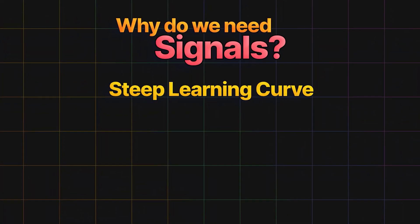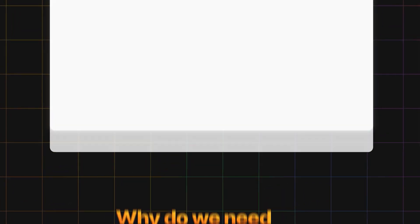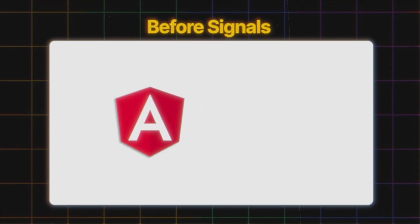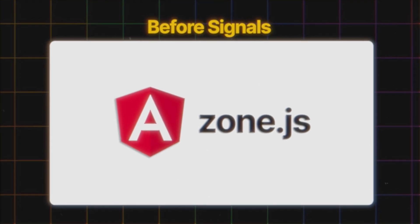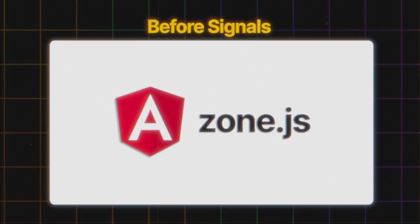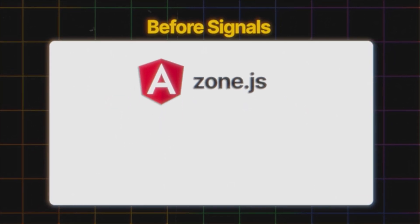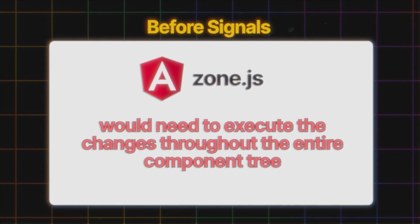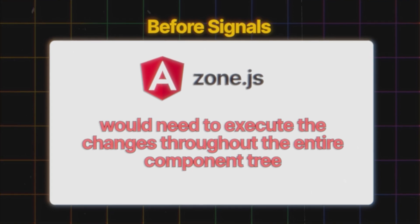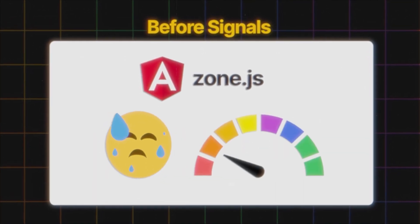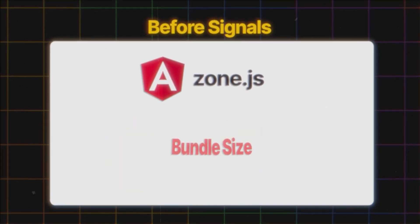Another point to highlight is performance, bundle size, and productivity. Before signals came into play, Angular relied heavily on a library called ZoneJS to detect any changes that occur in an Angular application. This means that for every minor change in an Angular project, the ZoneJS library would need to execute the changes throughout the entire component tree of the project, which brings a negative effect on overall performance and also causes the bundle size of the application to be bloated.